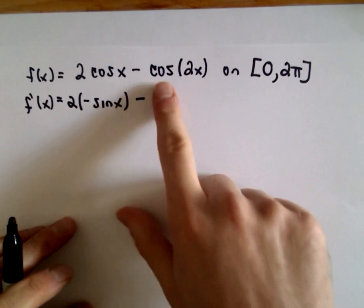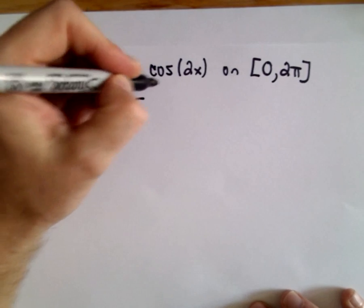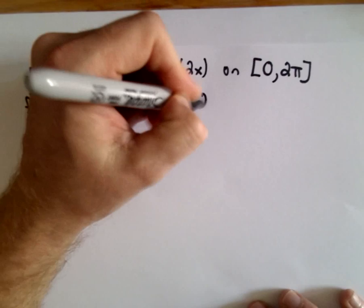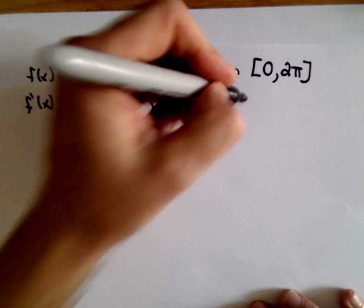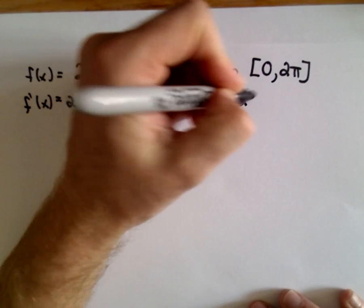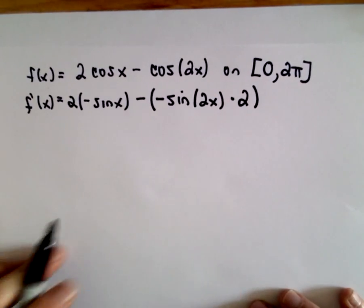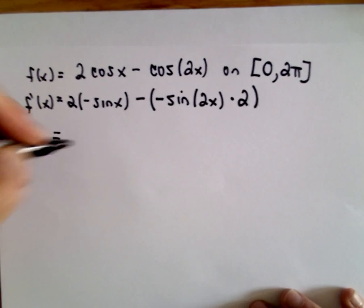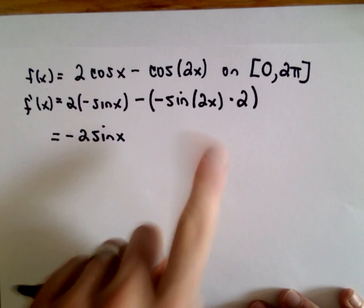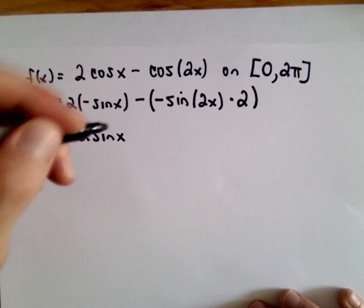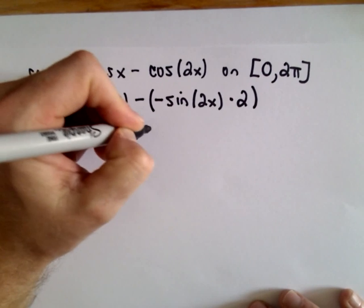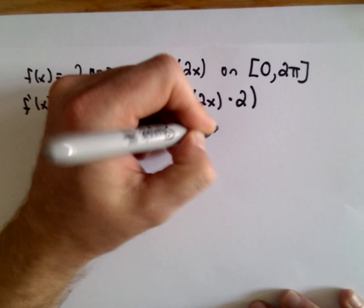We'll have to use the chain rule on our second term. The derivative of cosine is going to be negative sine. We leave the inside portion alone, that 2x. But then by the chain rule, we multiply by the derivative of the inside, which will give us positive 2, since the derivative of 2x is just 2. So I have negative 2 sine x plus 2 sine of 2x.